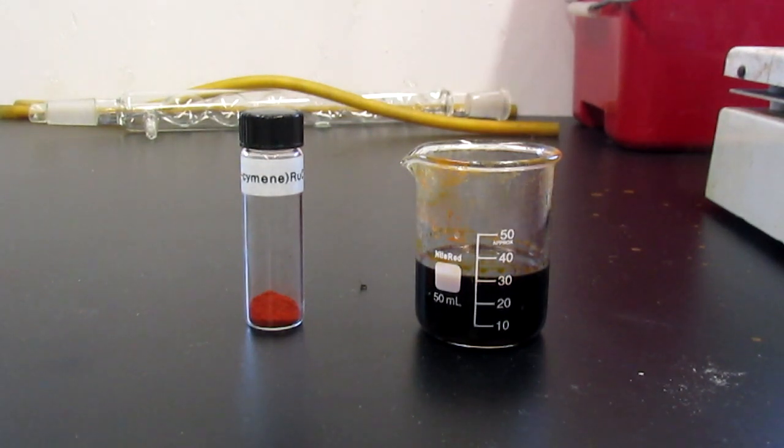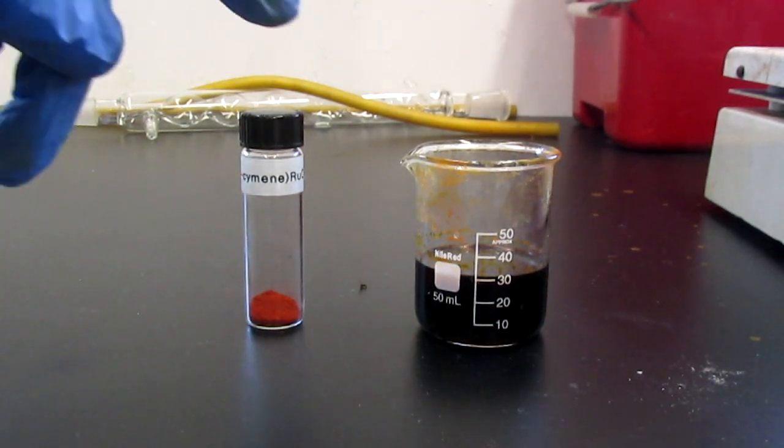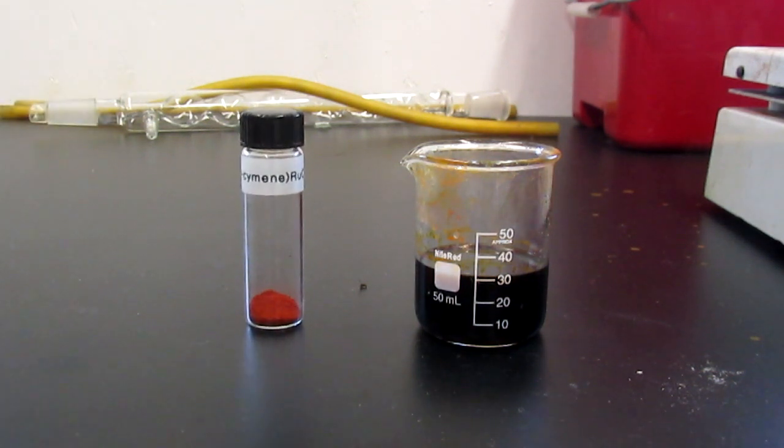So, we're going to boil down to 30 mils, so now it's time to crystallize out the product by putting it in the freezer overnight.